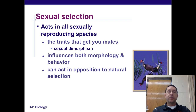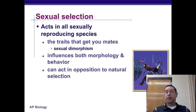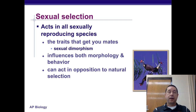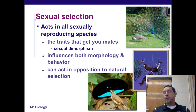Sexual selection acts on all sexually reproducing species. The trait that gets you mates often results in sexual dimorphism, where males and females look very different from one another. It can influence both appearance and behavior — males often perform courtship rituals or compete with other males for mates. Sometimes what attracts a mate can be in opposition to natural selection, making you less likely to survive but more likely to attract a mate, so there's a balance. For instance, the male peacock has lots of feathers, very attractive to females, but not great at avoiding predators.